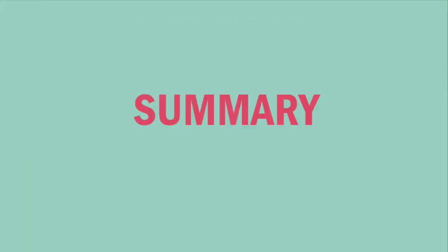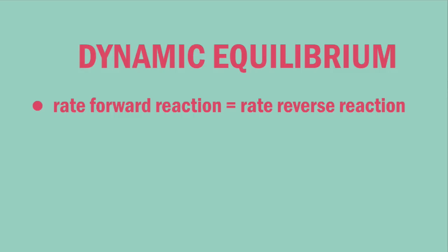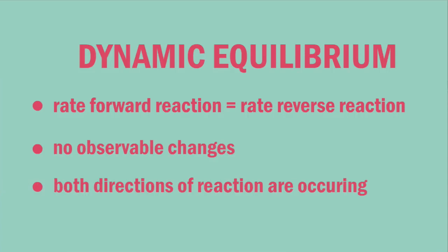In summary, a chemical system is said to be at equilibrium when the rate of the forward reaction is the same as the rate of the reverse reaction. There are no observable changes, but both directions of the reaction are occurring, so it is a dynamic equilibrium.